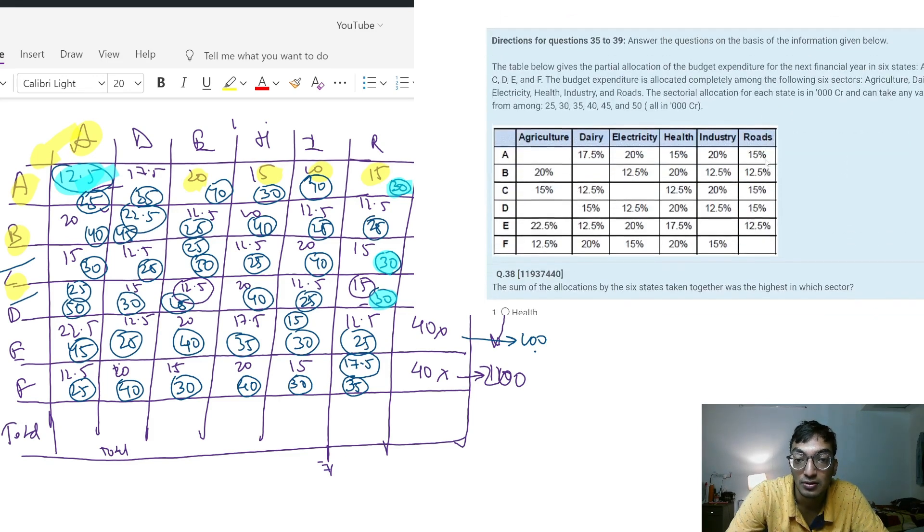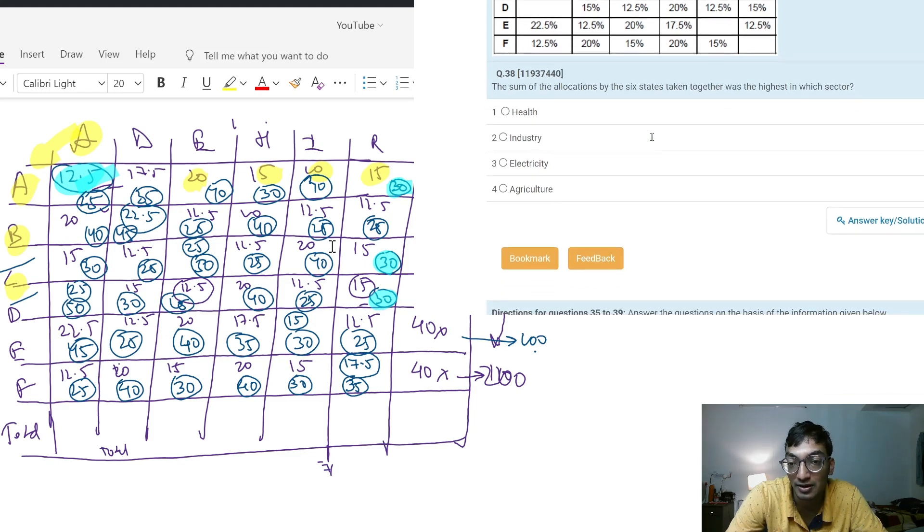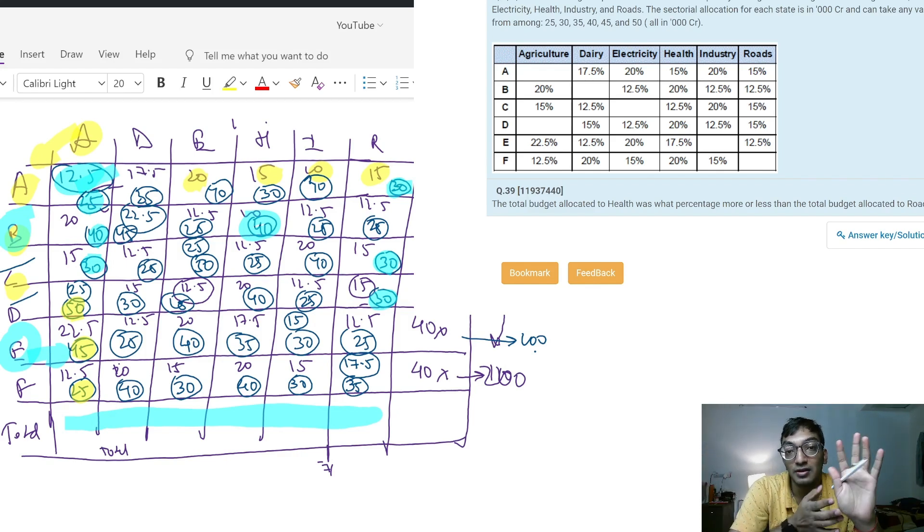The sum of allocation by six states taken together was highest in which sector - you have to calculate the total for all of them based on these numbers. The total budget allocated to health was what percentage more or less - again you will be able to take the total and get an answer. This was I wouldn't say a tough set but a tricky one. It takes a bit of time to figure out, but once you figure it out it's just number filling and you'll easily pass it through.